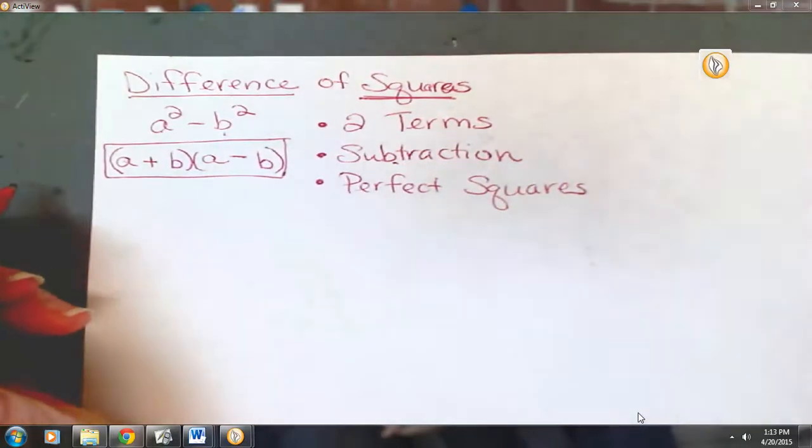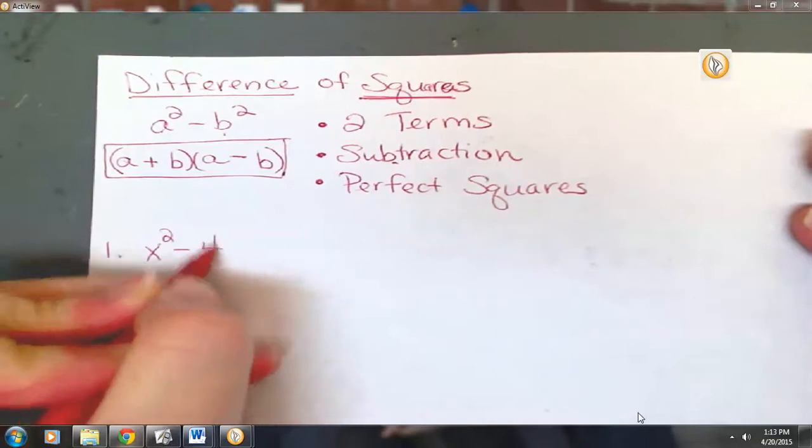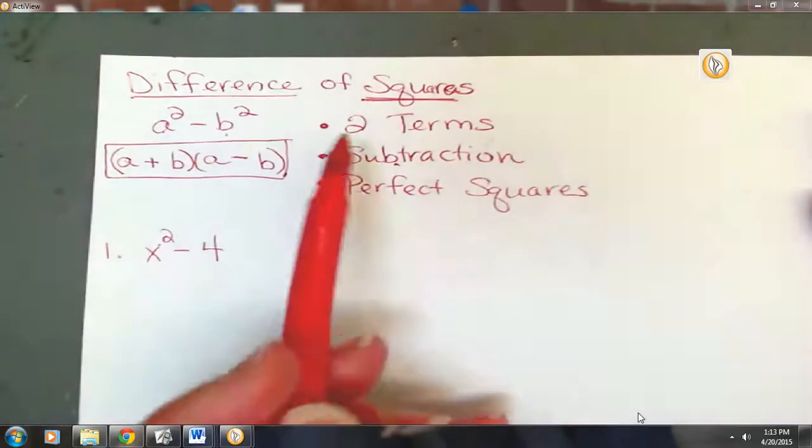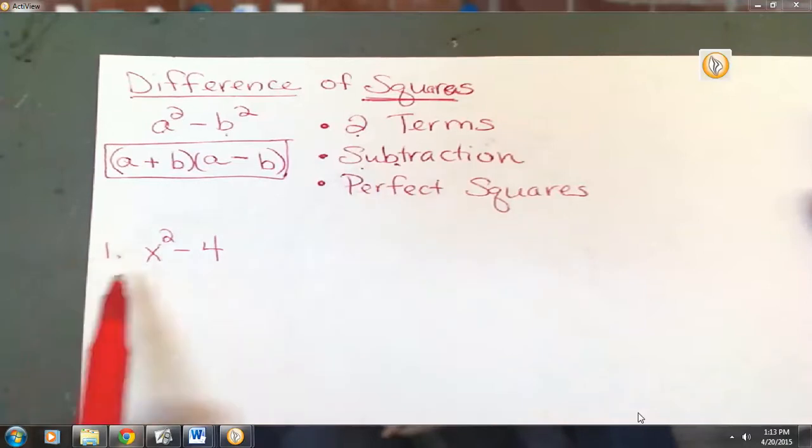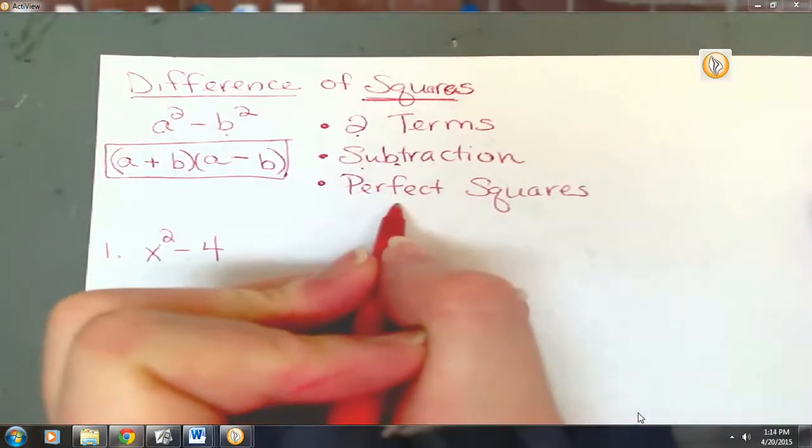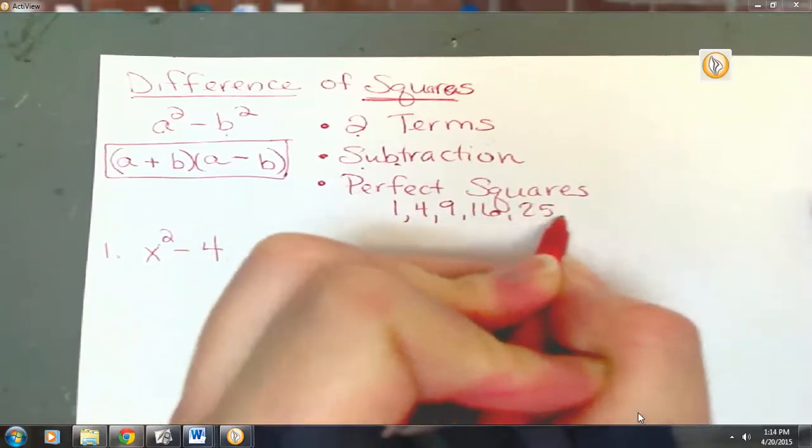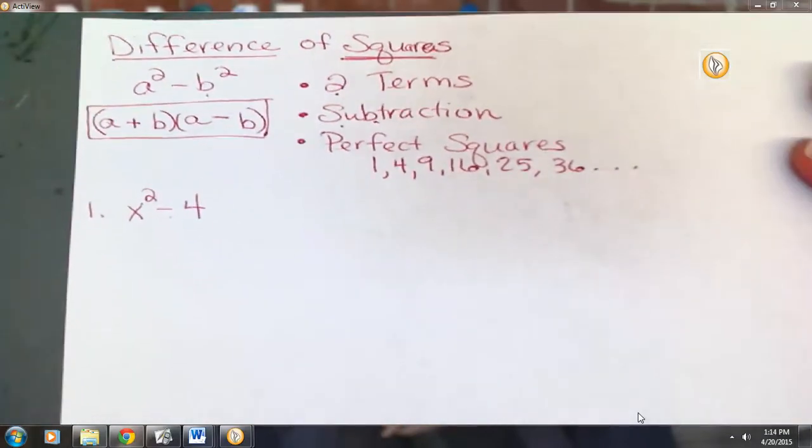So let's look at some of these on that right-hand side. Let's look at problem number one. Now, x squared minus 4. Is this a difference of squares? We'll go through a list. Do we have two terms? Yes. Do we have subtraction? Yes. Do we have perfect squares? Yeah. And you can think of numeric perfect squares like 1, 4, 9, 16, 25, 36, et cetera. We've looked at those already this year, haven't we? Squares. So this is a difference of squares, so we can factor it as such.